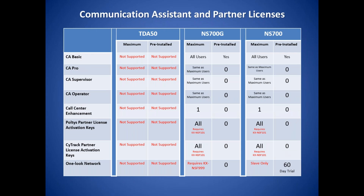The NS700 and the NS700G are much more IP-centric than the TDA50, which allows for connectivity with existing networks and Panasonic applications and Panasonic partner applications. Communications Assistant is a desktop application that is feature-rich and puts many telephony features on the user's desktop. It also has an Outlook toolbar and an instant messaging feature. Panasonic partners Pultis and SyTrack are fully supported by the NS700 and the NS700G.